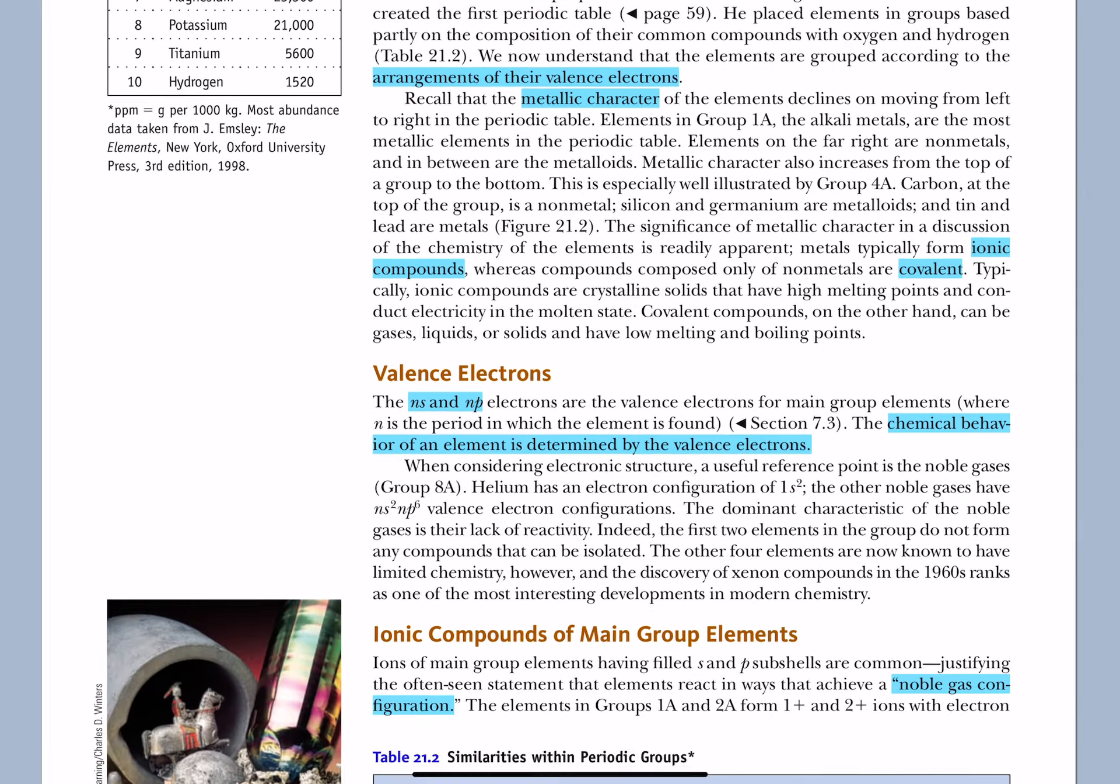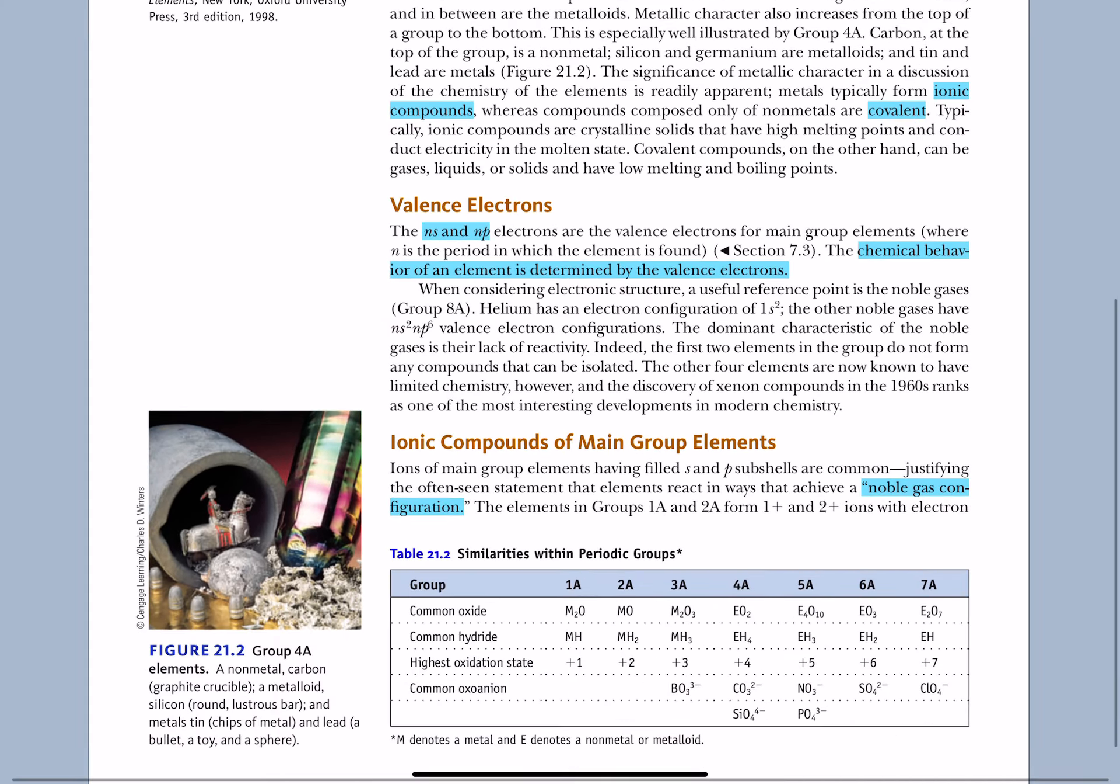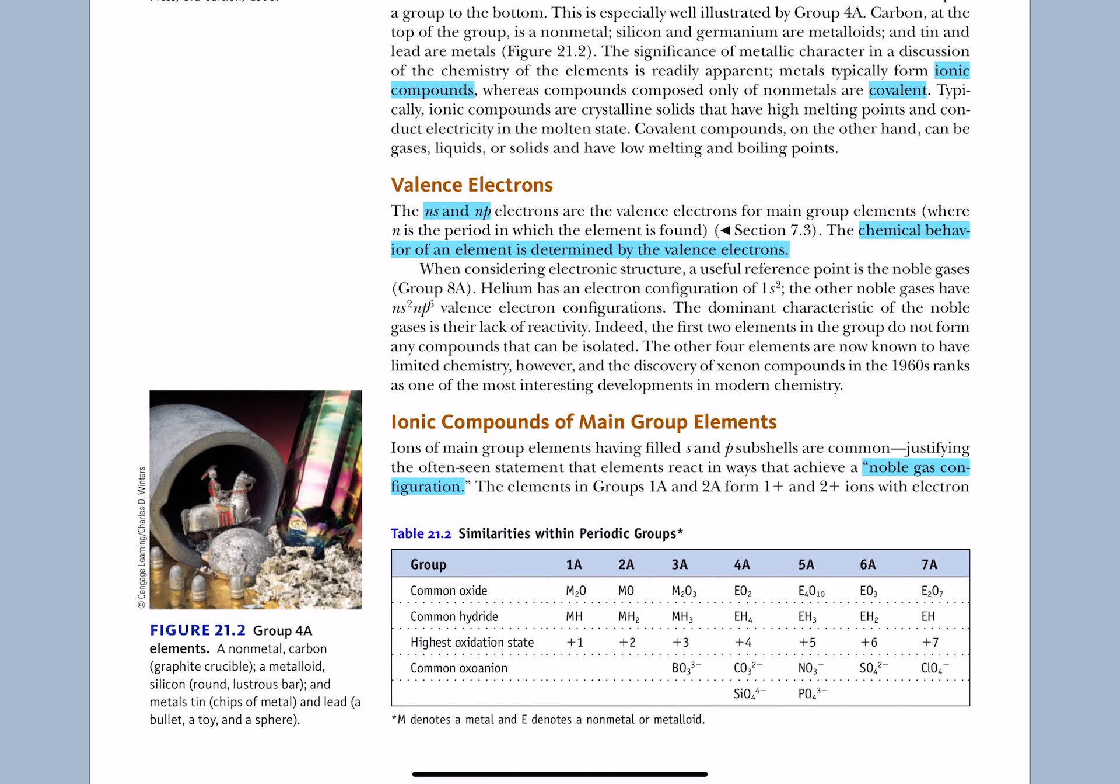Now, it's the electrons in the outer shell that are most important. Those are the ones that are involved in chemistry. So, when we say NS and NP, N is the principal quantum number, energy level number 1, 2, 3, 4, 5, that's N, and S and P refer to the subshells.